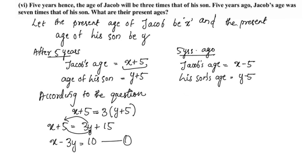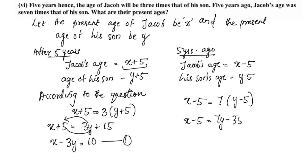Now, 5 years ago, Jacob's age was 7 times that of his son. So, x minus 5 is equal to 7 times y minus 5, giving x minus 5 equals 7y minus 35. Rearranging, x minus 7y equals negative 30. This is the second linear equation.